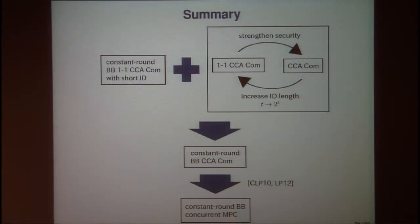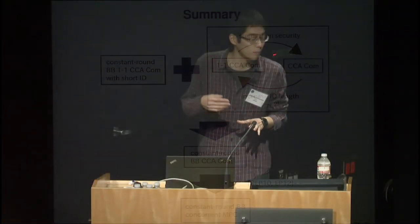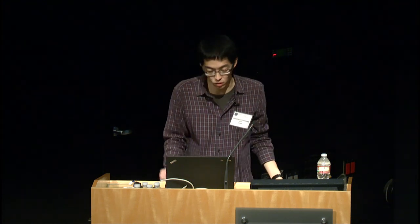In summary: in this work, we first show a constant-round black-box construction of a CCS-secure commitment with weak security and short ID. We then show how to strengthen the security and how to increase the ID length. By combining these results, we obtain a constant-round black-box CCS-secure commitment, and using prior results, we obtain constant-round black-box constructions of multi-party computation protocols from sub-exponential-time assumptions. Thank you.